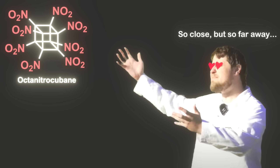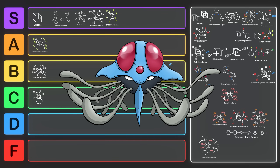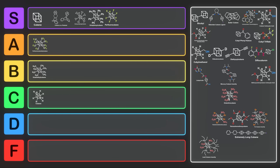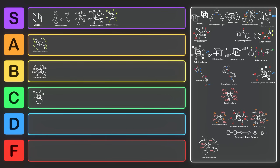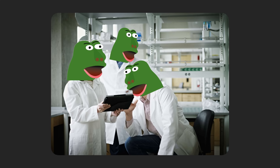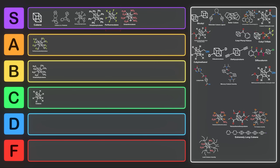Tom's favorite cubane is probably octanitrocubane — look at all those nitro groups. This thing is super duper substituted. The reason people are interested in nitrocubanes is due to the high energy of the cubane system combined with the presence of the nitro groups — lots of nitrogen and oxygen, so this thing should completely combust and might be very energetic. Nobody's ever made enough to give it a proper test, but researchers keep trying to find new ways to make highly substituted nitrocubane derivatives. Octanitrocubane: easy S tier.